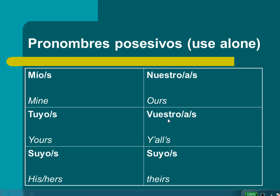Vuestro is for the Spain form, which I usually call 'y'all,' just to make sure you know it's a different dialect. It's like ustedes, which is used in Mexico and most of Latin America, but vuestro is for Spain. So vuestro, vuestra for singular objects that are all y'alls, and then vuestros and vuestras for plural objects. Suyo and suyos, which is the same as his or hers, is also theirs.